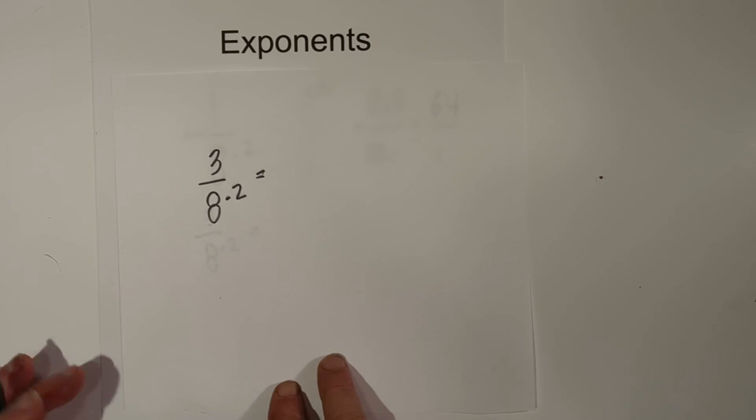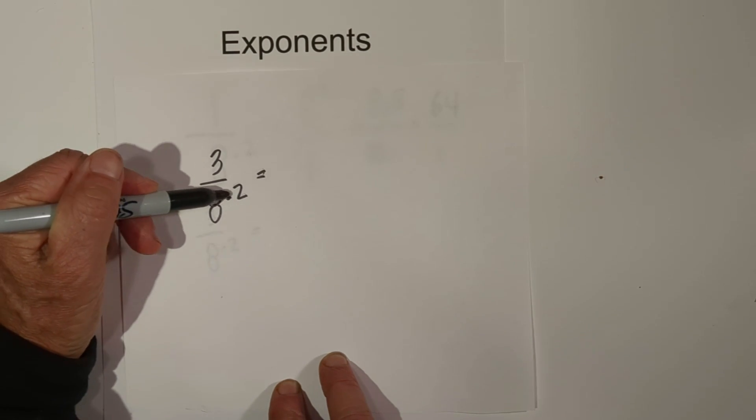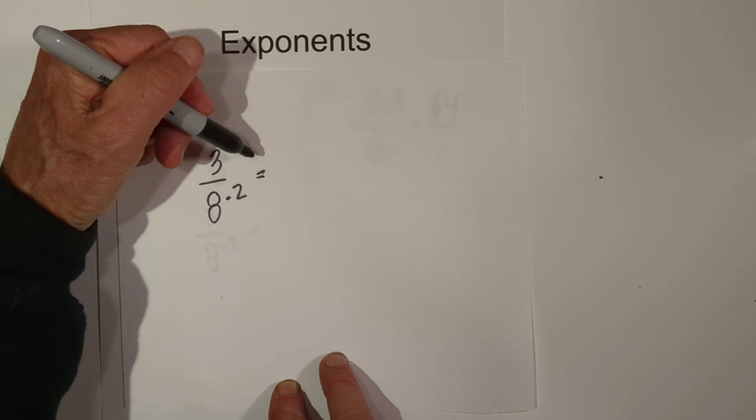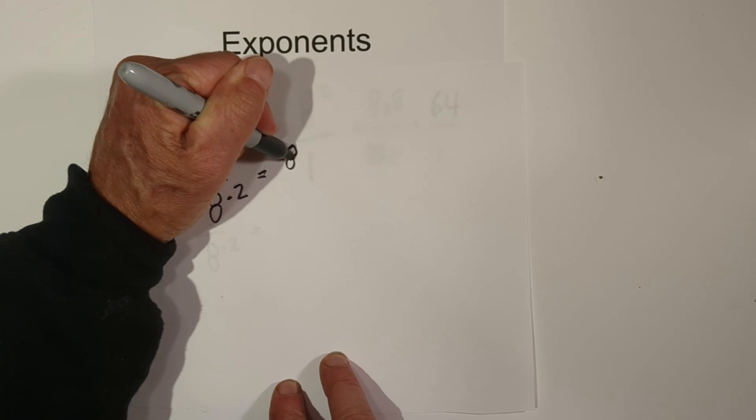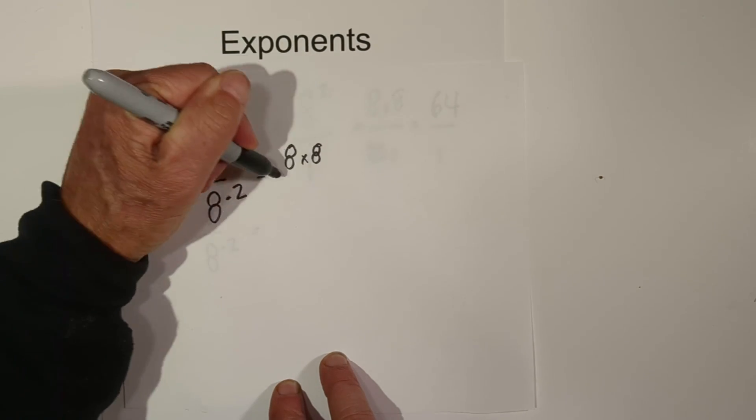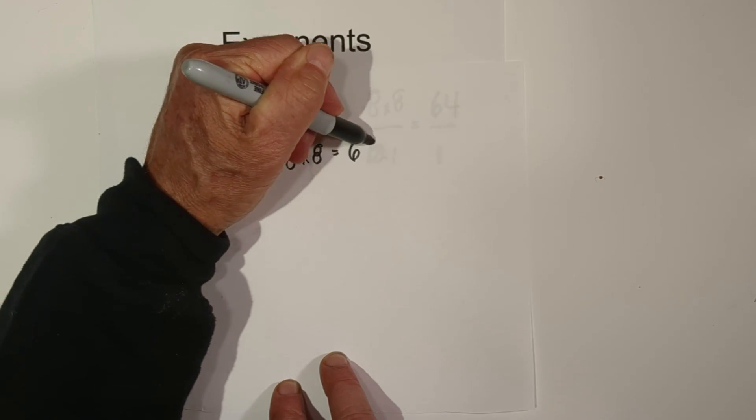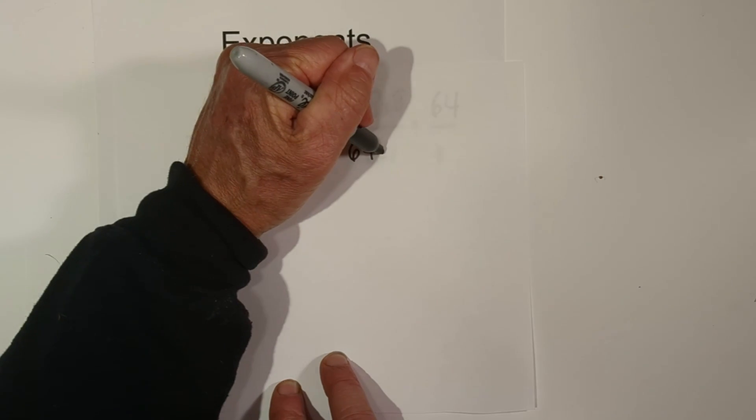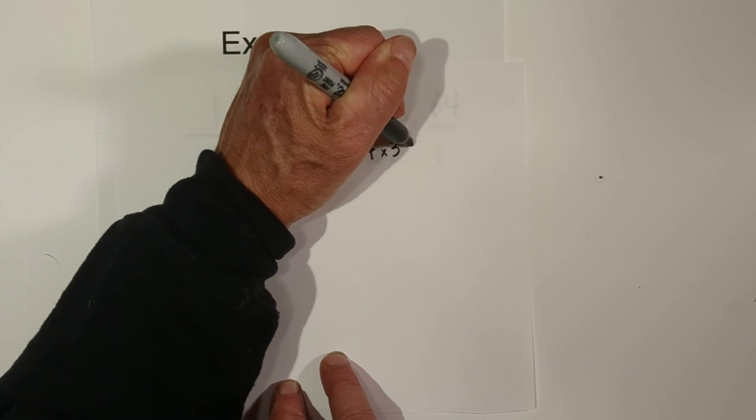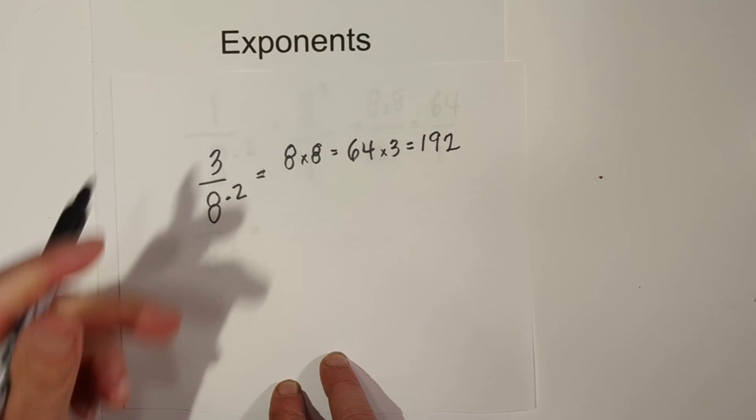Now, what if you had 3 over 8 to the negative second? Well, to turn this positive, you need to have the reciprocal of 8, which is 8 over 1. So we'll have 8 times 8, because that's 8 to the second power, and that equals 64. But now the 3 is not negative, so you move the 3 over and you multiply the 64 times 3, and that becomes 192.